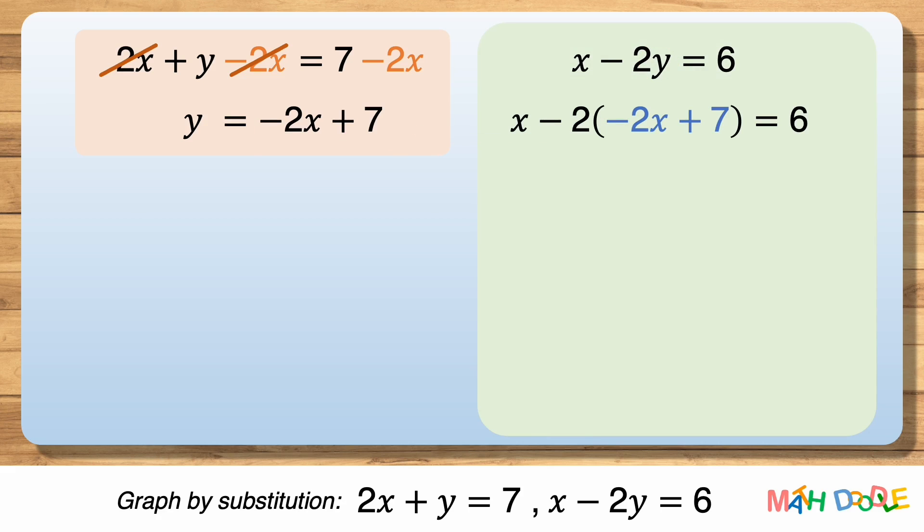Then, this can be simplified to x plus 4x minus 14 equals 6. And it can be further simplified to 5x minus 14 equals 6.